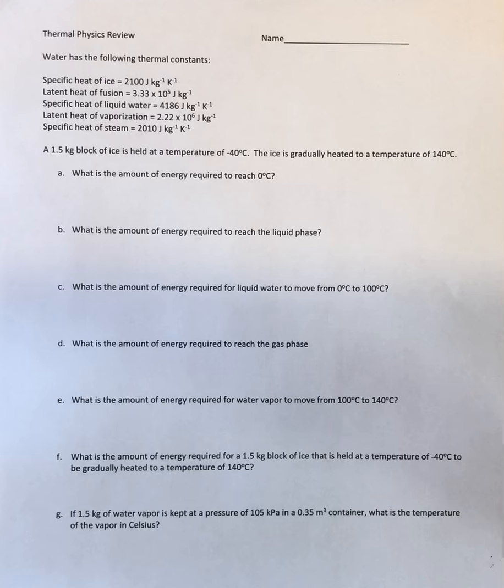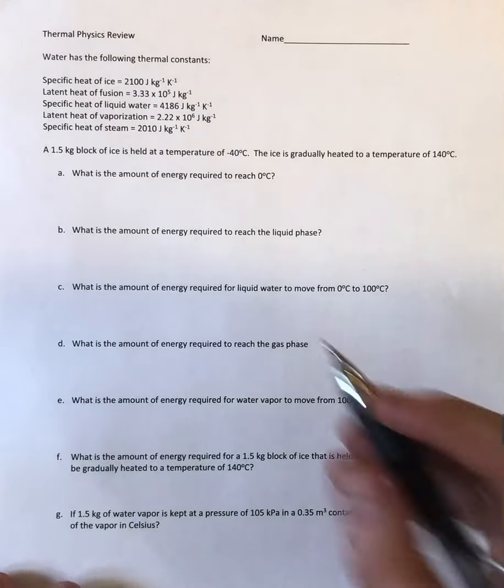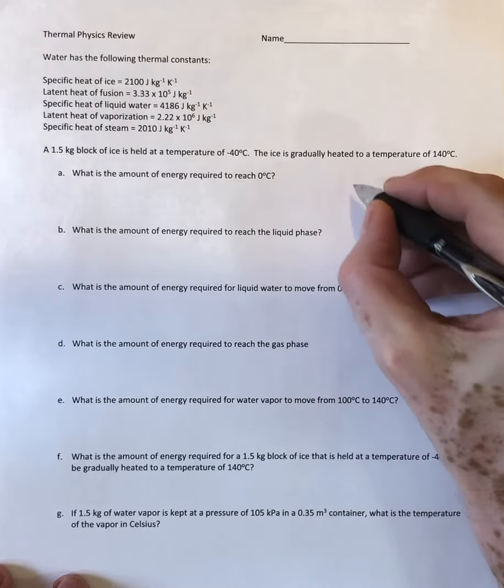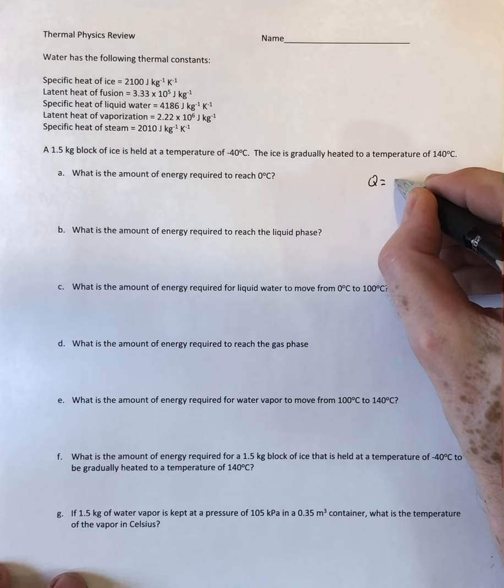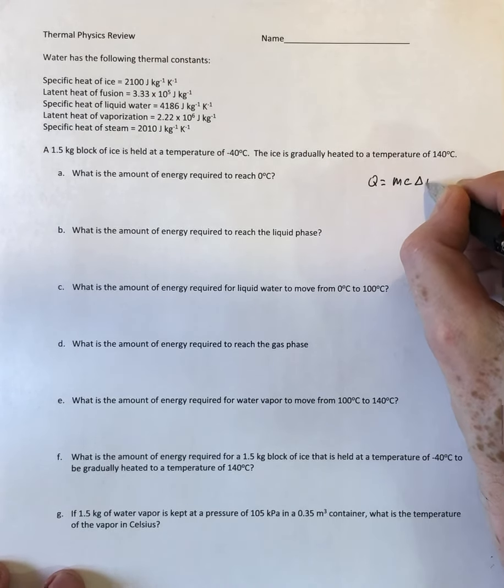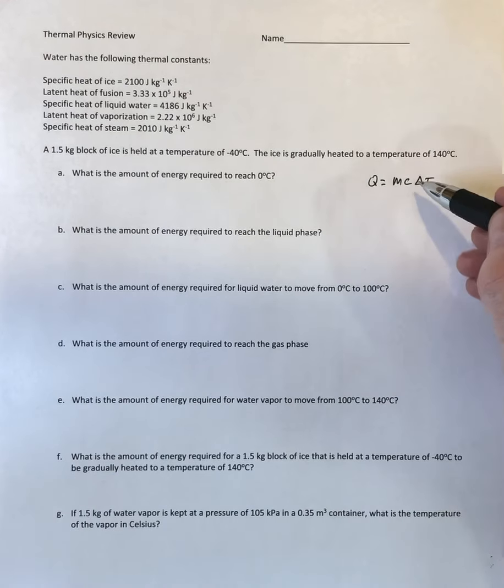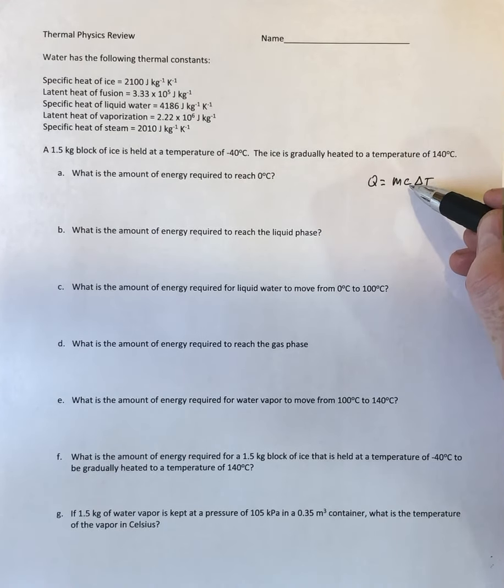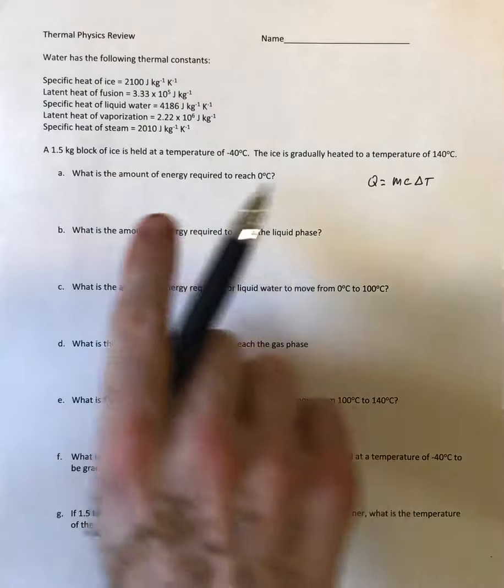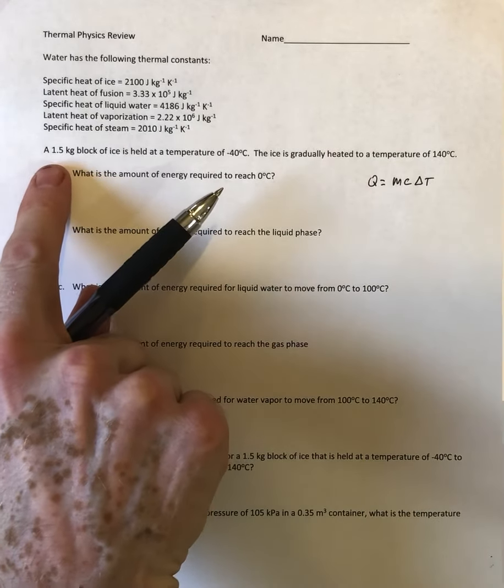The equation for all of these whenever you're heating up any substance is Q equals M C delta T. This is mass times the specific heat of the substance times the change in temperature, and it gives you an answer in joules.